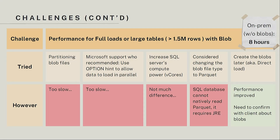We tried several ways to improve performance. One of the first things we tried was to partition the blob files, but that was too slow. We also reached out to Microsoft and asked for their advice — they recommended using the option hint to allow data to load in parallel, but that was still too slow. We tried increasing the SQL Server's compute power, but that did not make much difference. We also considered changing the blob file type from JSON to Parquet; however, SQL database does not natively support Parquet, so that was not an option. The solution that actually worked was to do a direct load — skipping blob creation and loading directly from the source database into the SQL database in the MDP — and this significantly improved performance.